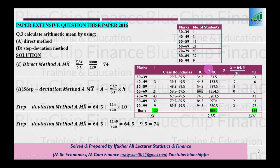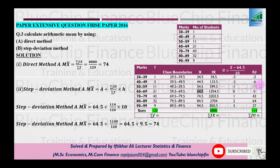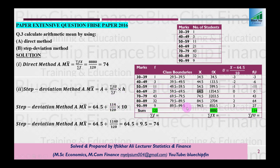Ab f ke saath u ko multiply karein to fu aa jayega: −3 × 1 = −3, −2 × 3 = −6, −1 × 11 = −11, aur isi tarah. Finally sum of fu = 114. Formula mein rakhein: A (64.5) + (114 / 120) × 10. Solve karein aur mean = 74 aa jayega — same answer jo direct method mein aaya tha.